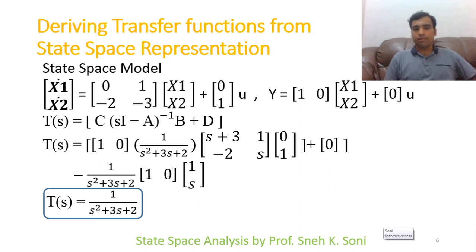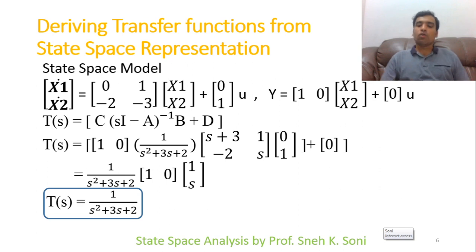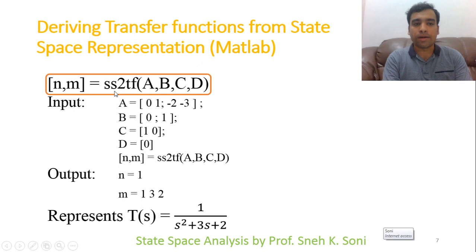For the given system, the transfer function C(sI − A)⁻¹B + D = 1/(s² + 3s + 2). Note that we have neglected initial conditions, as transfer functions do not consider them. Now we will use MATLAB to convert state space to transfer function. The command is: [n, m] = ss2tf(A, B, C, D), where ss2tf stands for state space to transfer function. A, B, C, D are the input matrices.